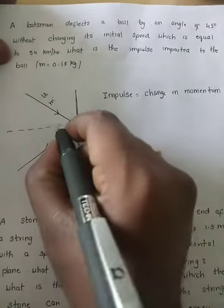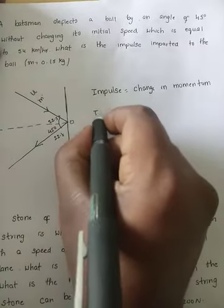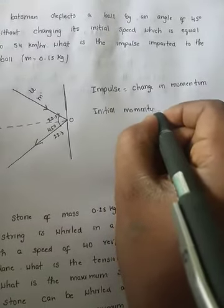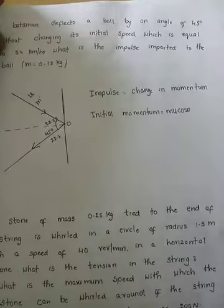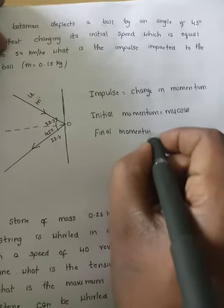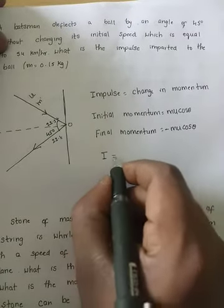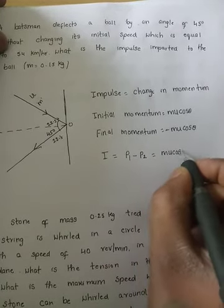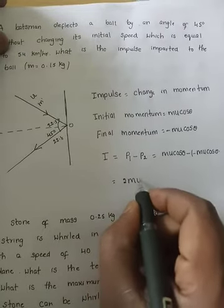If you divide the 45° angle into two, you get 22.5 degrees and 22.5 degrees. The initial momentum is equal to mu·cos θ. The final momentum is also the same but its direction is opposite, so it becomes minus mu·cos θ. Impulse I equals p₁ minus p₂: mu·cos θ minus (minus mu·cos θ) gives 2mu·cos θ.